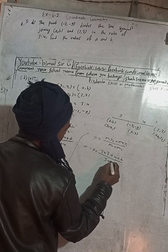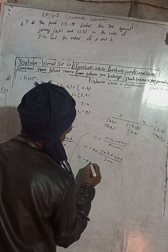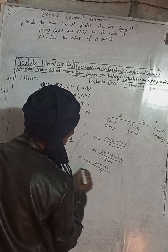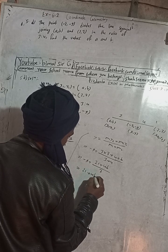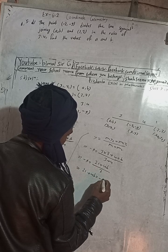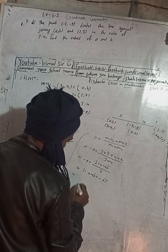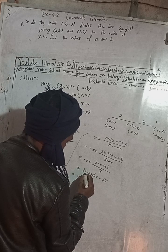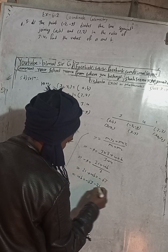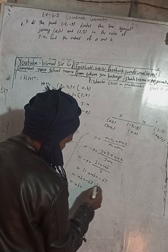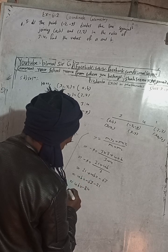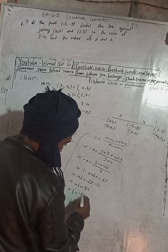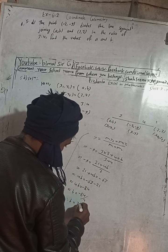3 plus 4, this implies -9 is equal to 7×3 is 21 plus 4b, divided by 3 plus 4 is 7. This is equal to 21 plus 4b is equal to -9×7 is -63. This implies 4b is equal to -63 minus 21. Both are negative, so this will be minus. This implies b is equal to -84 divided by 4, so b is equal to -21.